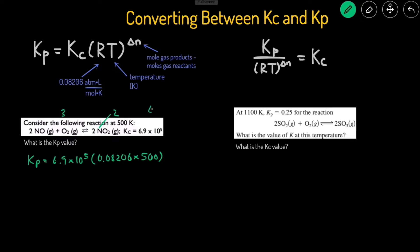So the change in mole, the delta N, is going to equal the products, 2 moles of gas on products minus 3 on the reactants, so that would just be equal to negative 1.